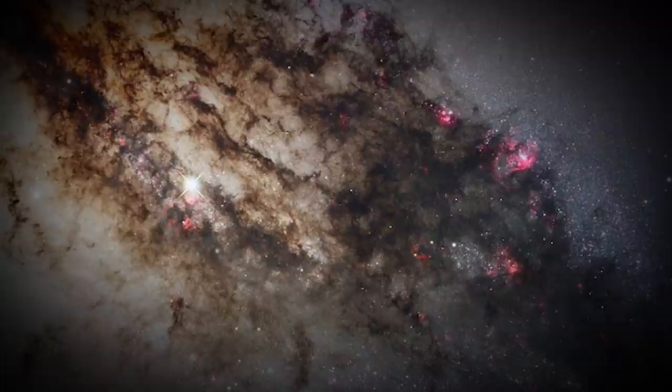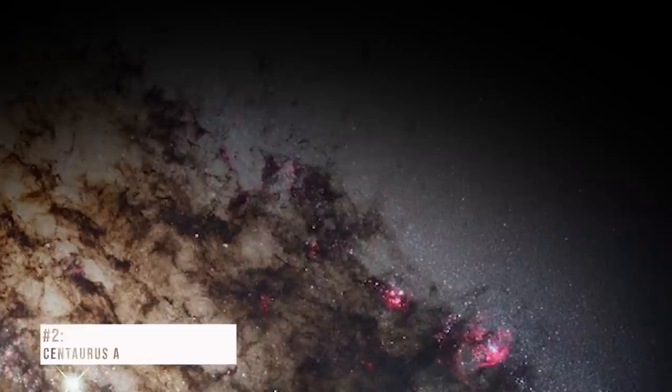Number 2. Centaurus A. This remarkable picture of Centaurus A, or NGC-5128, shows the brownish dusty trail of dark matter. The importance of this picture lies in the fact that this is probably the only image that gives a clear, detailed view of the dusty area of the galaxy.